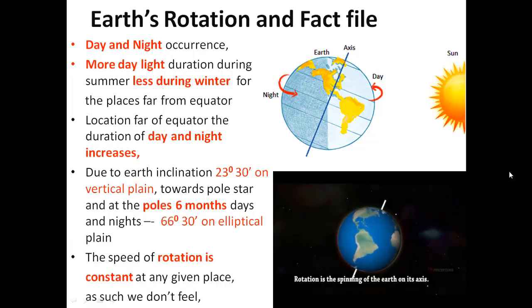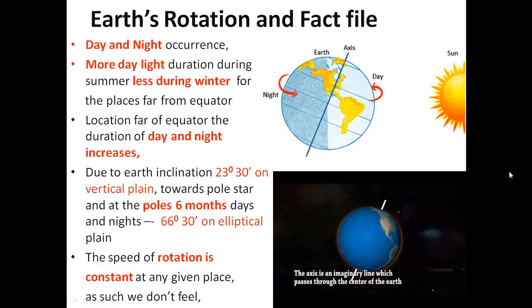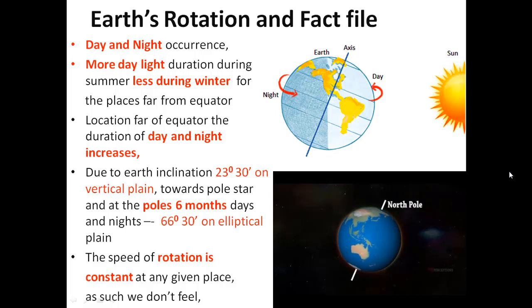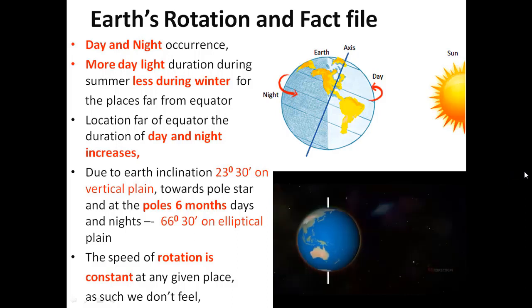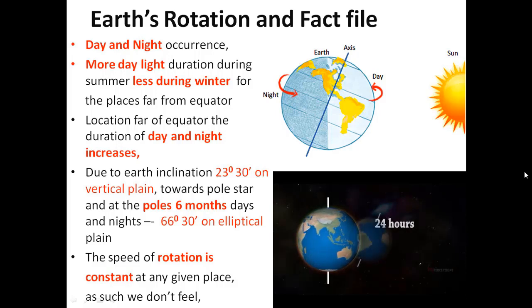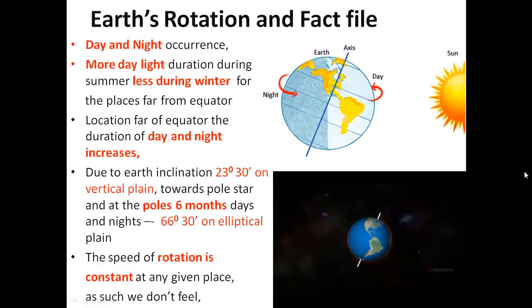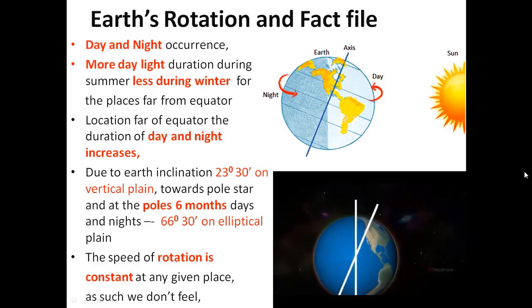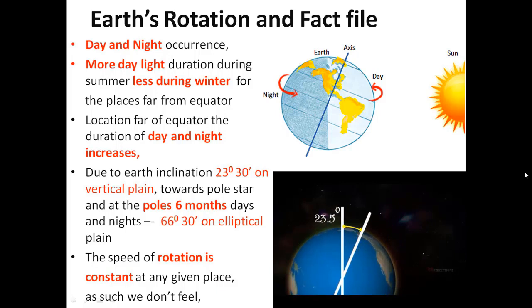Earth rotates and spins on its own axis. The axis connects the North Pole and the South Pole. For locations far from the equator, the duration of day and night increases.